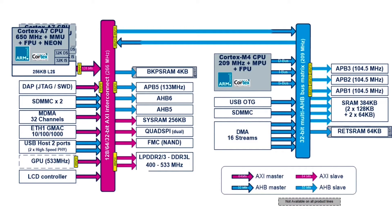Internally, the peripheral mapping is done by attaching peripherals to either an Advanced Extensible Interface, or AXI bus, or to an Advanced High-performance, or AHB bus, depending on the peripheral's best optimization. AXI has some extra features like multi-channel operation, out-of-order transactions, and full duplex operations that some peripherals won't use.